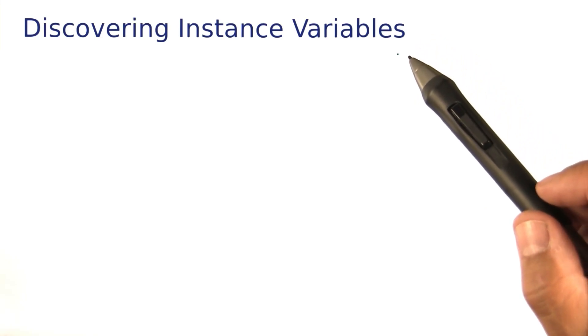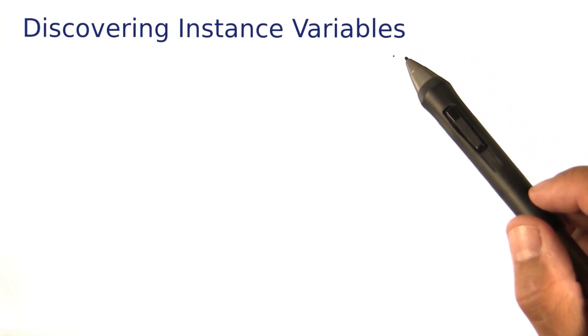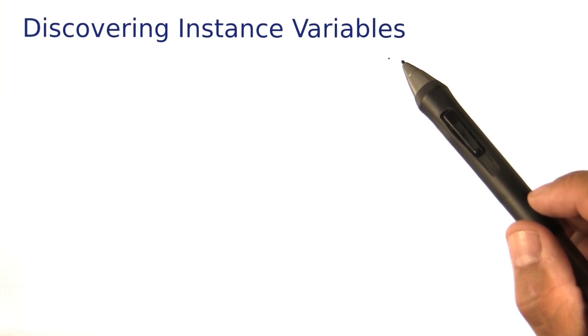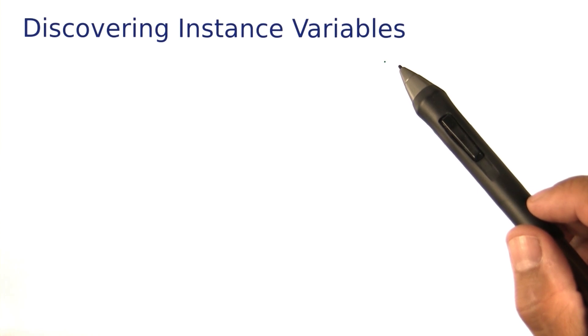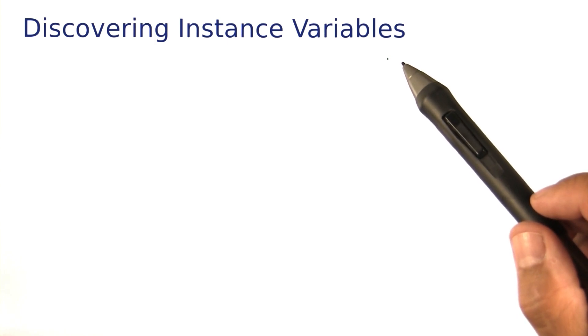Many lessons ago, we talked about how to develop the public interface of a class, the methods that one might want to call on an object of a class. But we've always given you the instance variables, because it turns out that picking the right instance variables isn't all that simple. Well, now the time has come for you to do more of that yourself, and I'd like to give you a few rules of thumb on how you might discover instance variables.